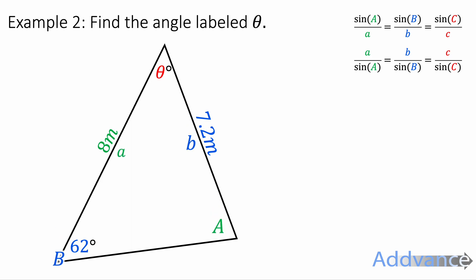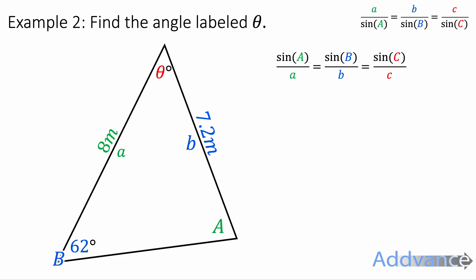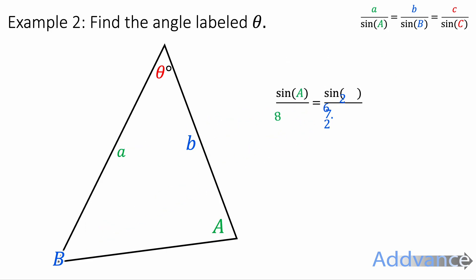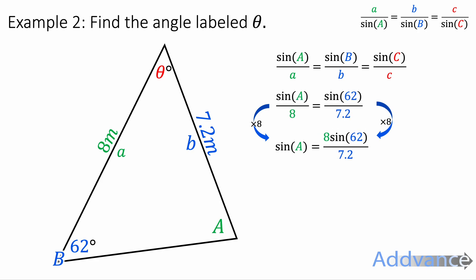So we label it a, a, b and b, and we take the sine rule for finding angles. We substitute the values in: 62 degrees, 7.2 and 8. We're trying to find the missing angle A. We get rid of the divide by 8 by multiplying by 8, and we get 8 sine 62 over 7.2.